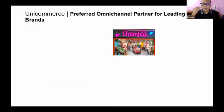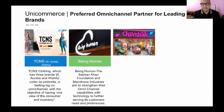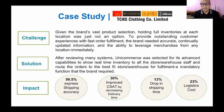Unicommerce has successfully implemented Omnichannel for a couple of Indian brands. Chumbak is one. TCNS is another hugely successful Omnichannel implementation for us, and they are really doing great. Being Human is another. We also have Saajay, which is a luxury brand — and while luxury brands generally go a bit slow on Omnichannel, that's not the case here. Saajay has very successfully implemented Omnichannel and is seeing positive traction in revenue and decreasing costs.